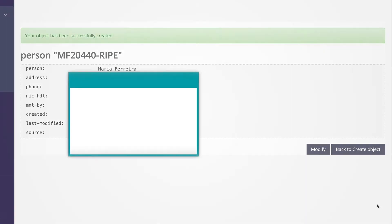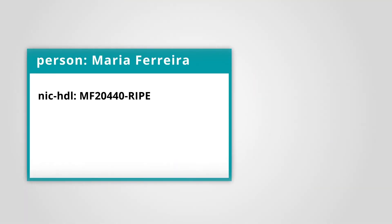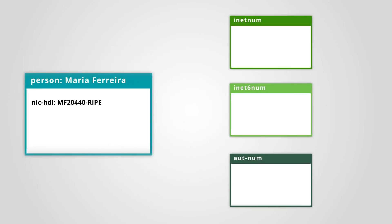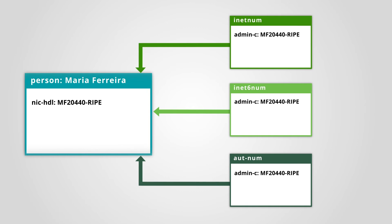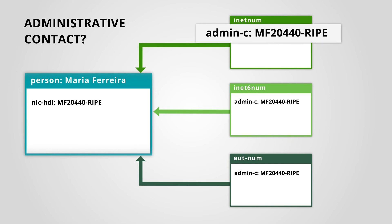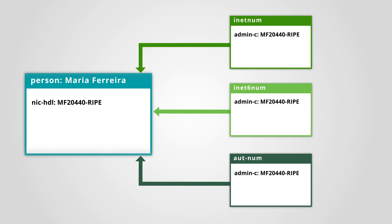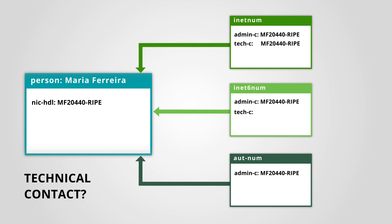What can you do with this person object? If you are the contact person for your network, then the RIPE database objects representing your network must point to your person object. If you are an administrative contact, the nic-handle should go in the admin-c attribute. If you are responsible for handling technical issues, then the nic-handle should go in the tech-c attribute.